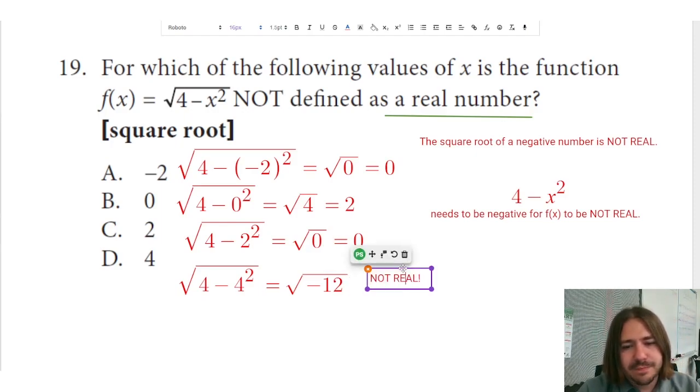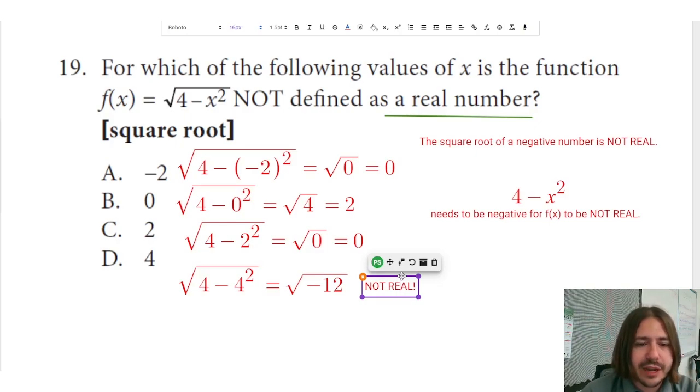Now we could talk for hours about these imaginary numbers, which are the ones that are not real. There's a whole lot that we could discuss here. But I think really the key idea that you need to know to get a problem like this right, is that when you try to take the square root of a negative number, you are going to get a number that's not real.